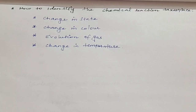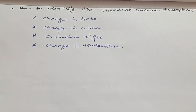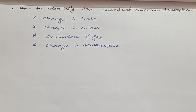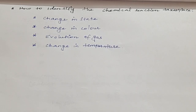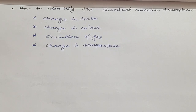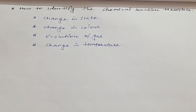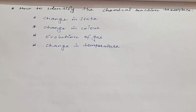Evolution of gas is also a way to identify whether a chemical reaction has taken place. Then the fourth one is change in temperature — in some reactions, the temperature will be decreased or increased. This also helps to identify a chemical reaction. We will see examples of: change in state, change in color, evolution of gas, and change in temperature.